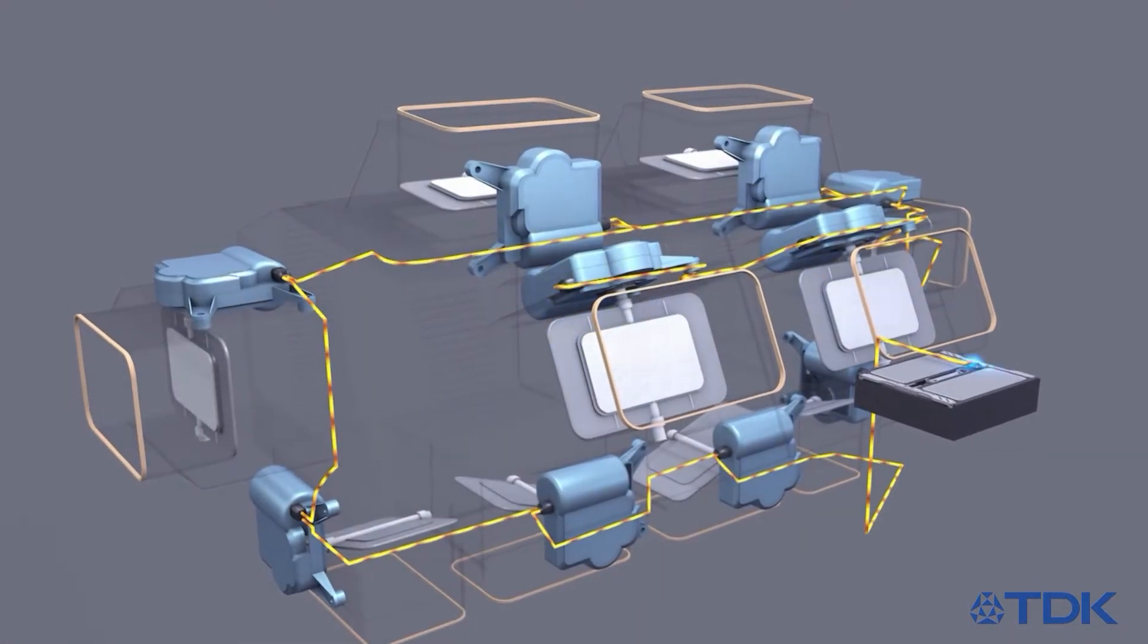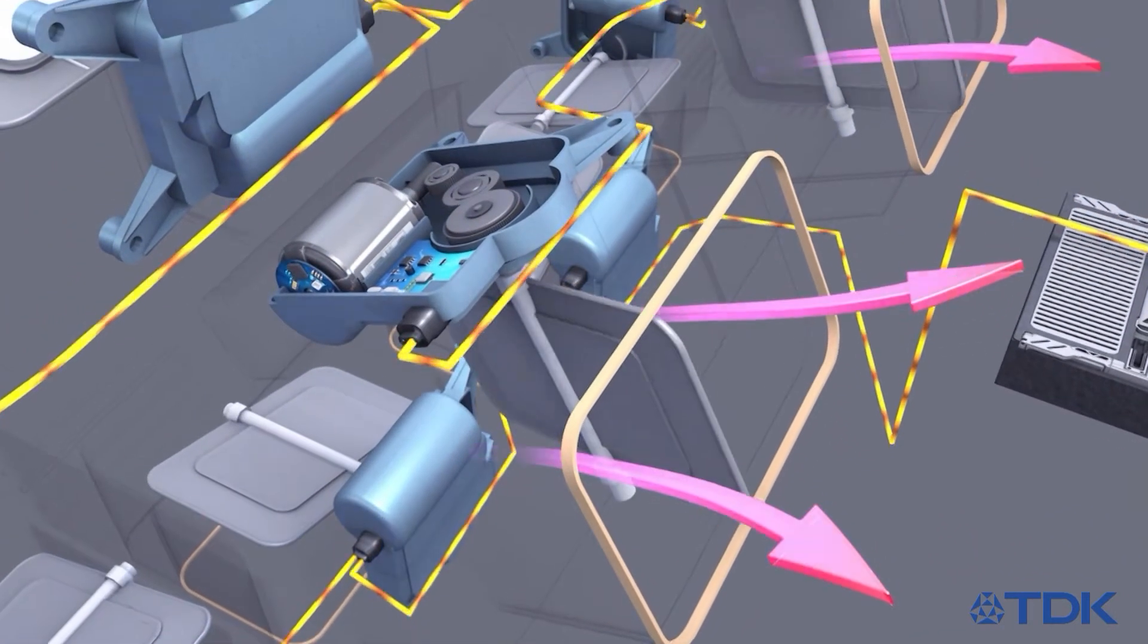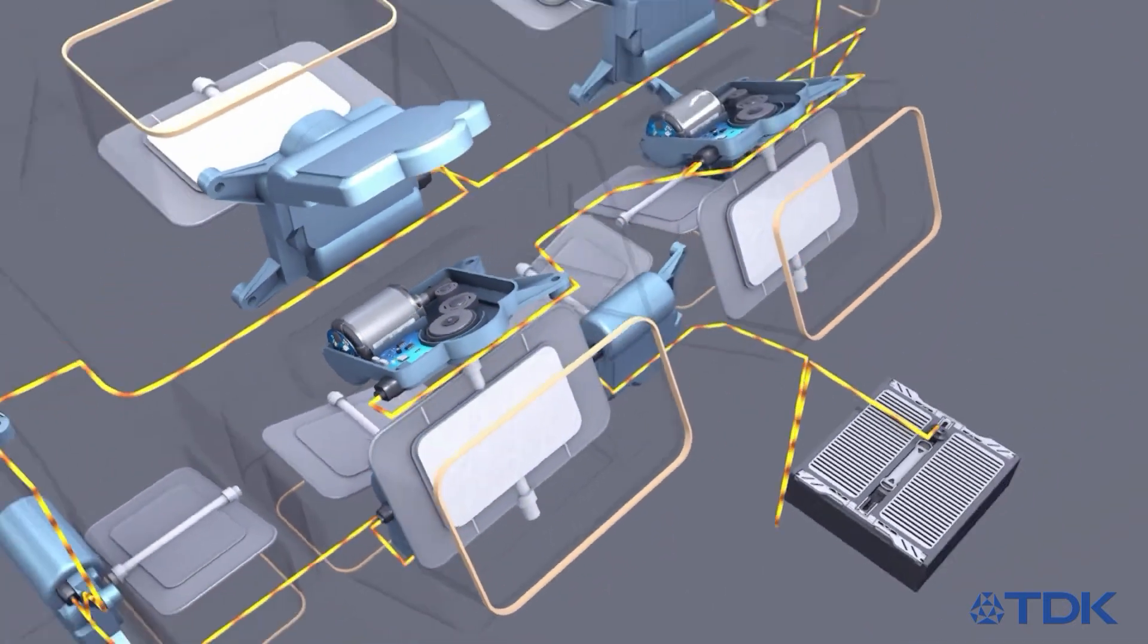Up to 10 damper actuators have to be connected to the HVAC control unit to direct this airflow. The most efficient way of doing this is via the single wire automotive LIN bus with auto-addressing.